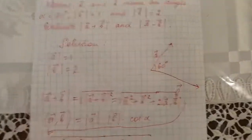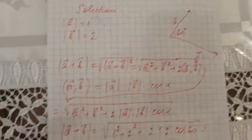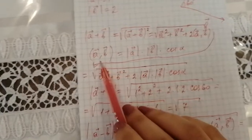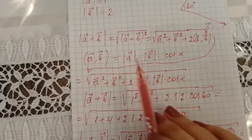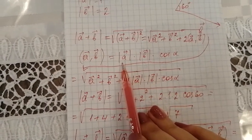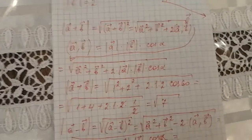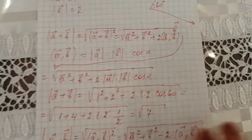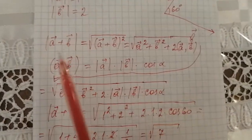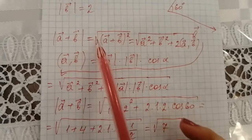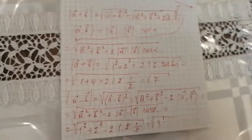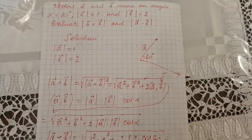That's the solution of this task. You have to know the formula for the scalar product of vectors A and B, which is |A| times |B| times cosine alpha, where alpha is the angle between the vectors. That's the complete solution of this task.